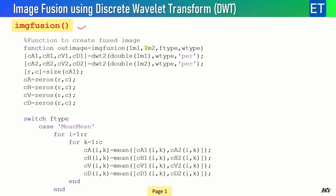Inside the imgfusion function, we receive image 1, image 2, the fusion type string, and the wavelet type. The first operation is to decompose both images into wavelet coefficients using the DWT2 function, giving us CA1, CH1, CV1, CD1 for image 1 and CA2, CH2, CV2, CD2 for image 2. PER is used for periodic extension of the image at the boundary, which is the signal extension mode to handle boundary problems. Then we initialize the output coefficient matrices CA, CH, CV, and CD. A switch-case structure is used to decide the fusion operation based on the fusion type string.